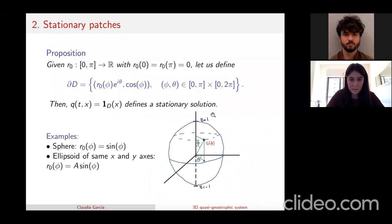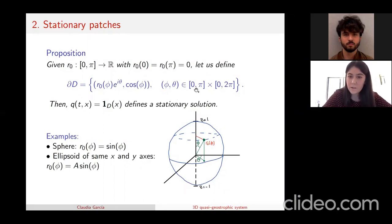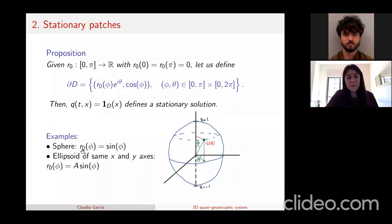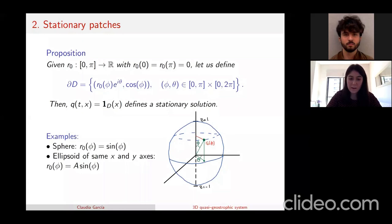This type of stationary solution looks like a shape between z equal to minus one and z equal to one, where at any height parameterized by phi we have a disk of radius r₀(phi). There are many examples: the first is the sphere, corresponding to r₀(phi) equal to sine of phi — that is just spherical coordinates for the sphere. Another example is any ellipsoid with the same x and y semi-axes, with r₀(phi) equal to a constant times sine of phi.